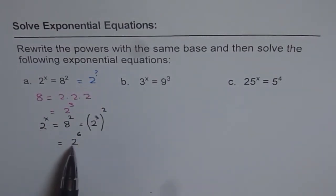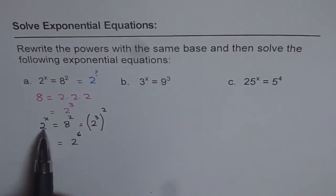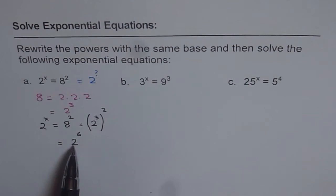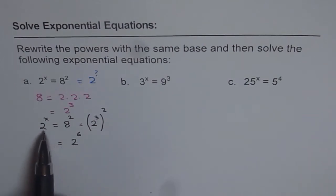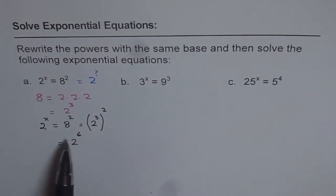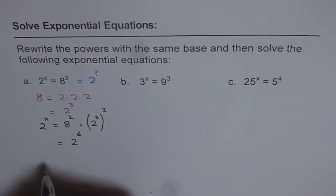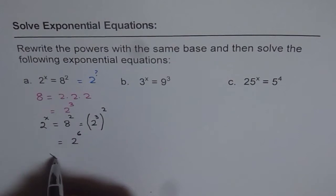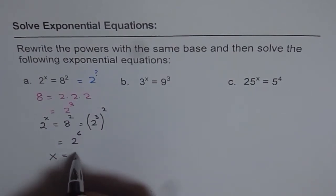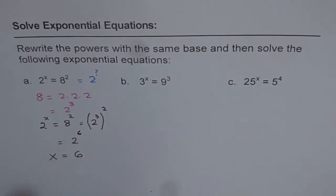Since we now have the same base — base 2 on both sides — their exponents should be the same. Therefore, we can write down our answer: x equals to 6. I hope you understand these steps.